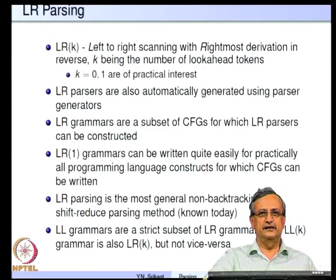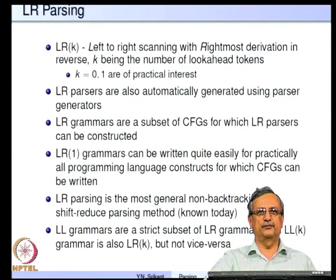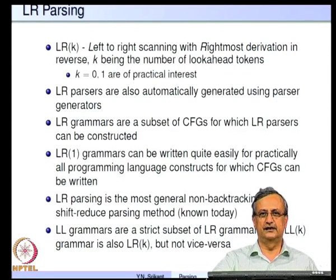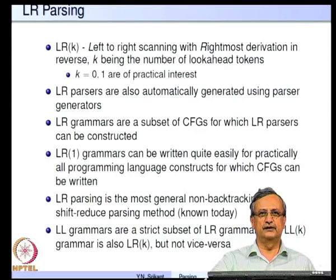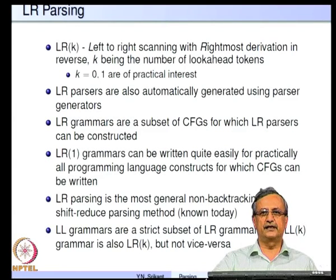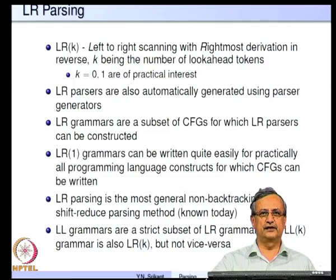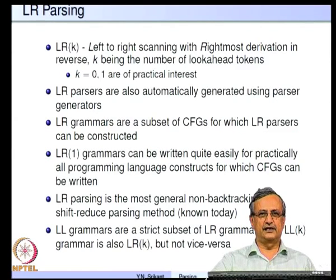As I explained in the previous lecture, LR parsing is a method of bottom-up parsing. It stands for left-to-right scanning with rightmost derivation in reverse, and K is the number of look-ahead tokens. LR(0) and LR(1) are of great interest in a practical sense. LR parsers are important because they can be generated automatically using parser generators, and LR grammars are a subset of context-free grammars for which such parsers can be constructed. It is easy to write LR grammars, which is why they are very popular today.